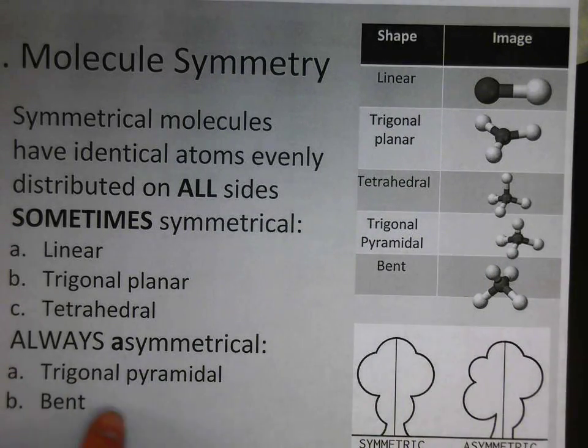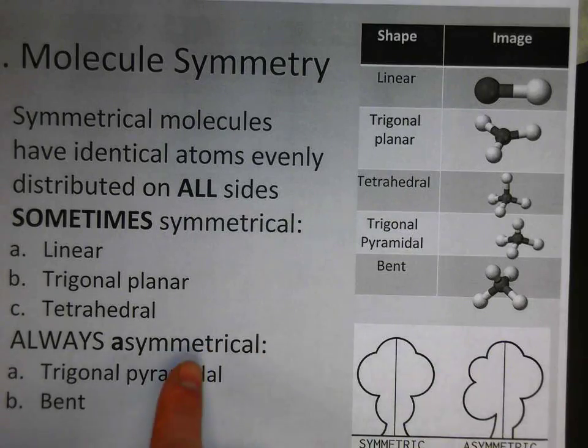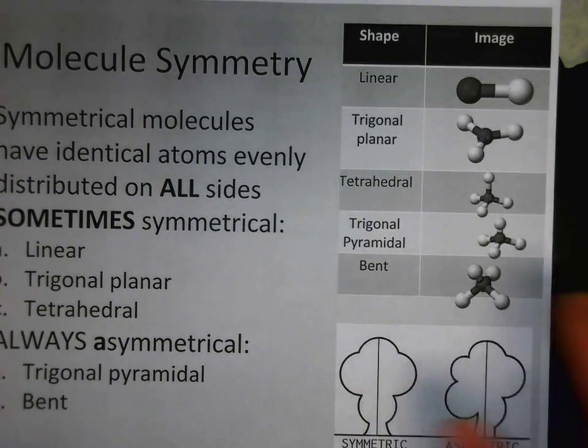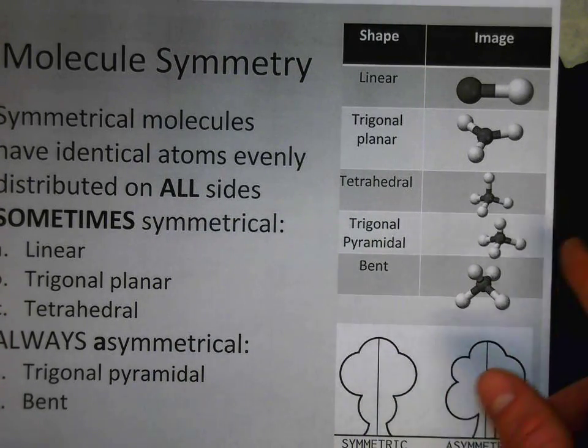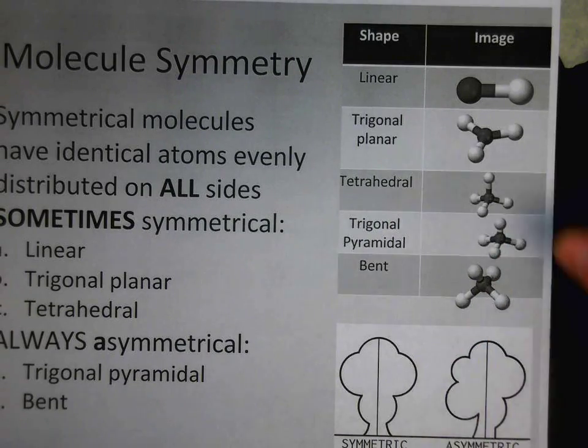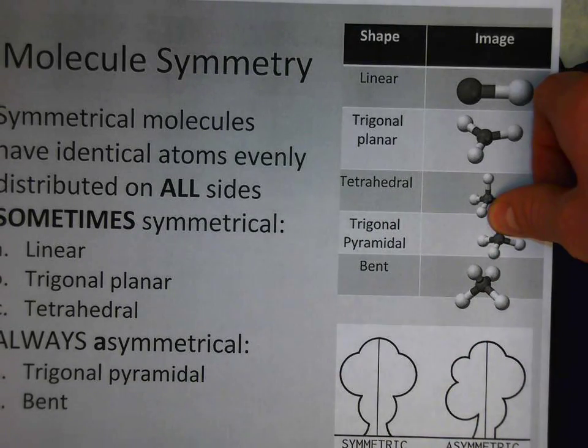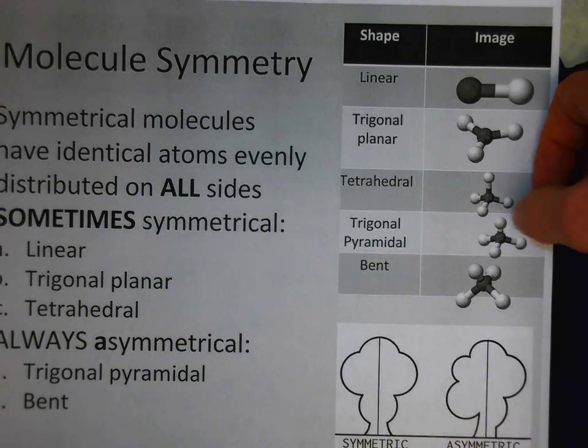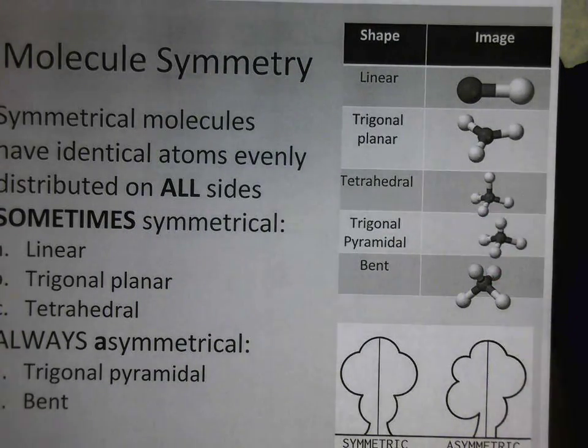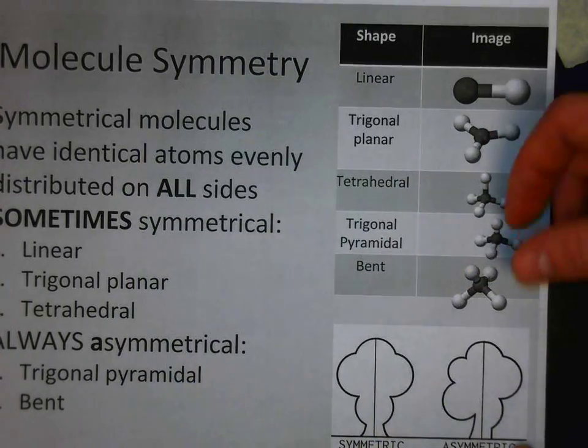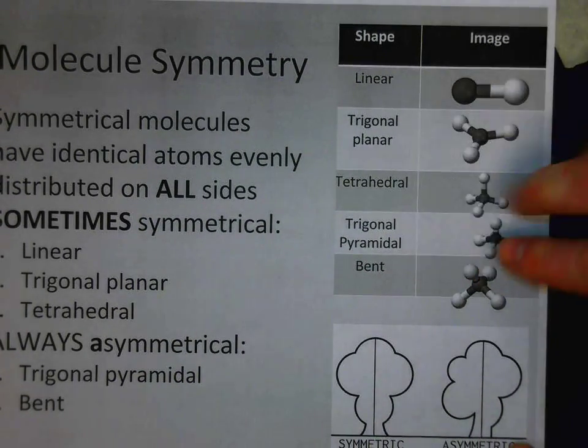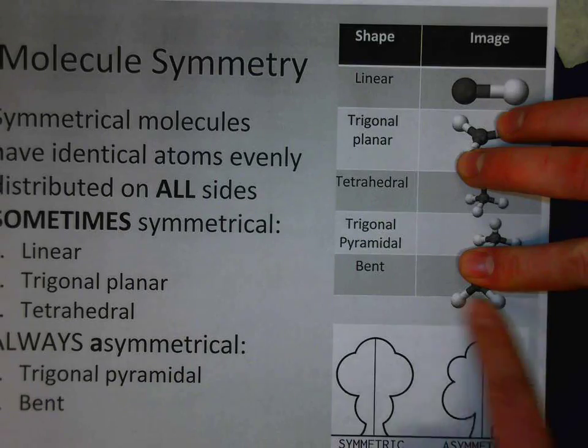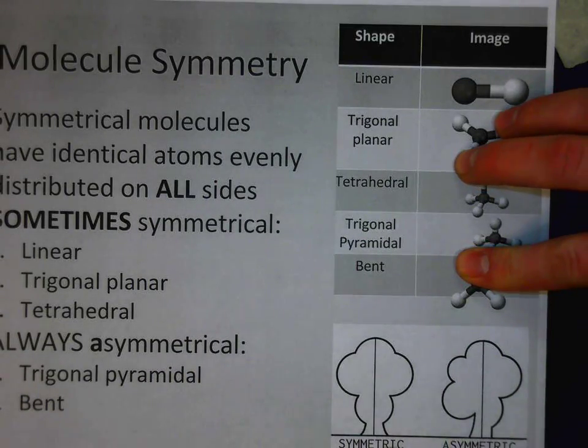There's other shapes that are always asymmetrical or not symmetrical. For instance, trigonal pyramidal and also the bent shape. The bent shape, like that of water, would just be this part. So that would be asymmetrical.